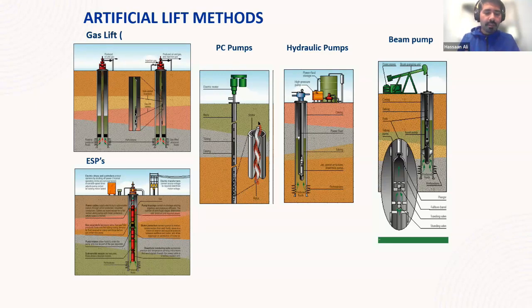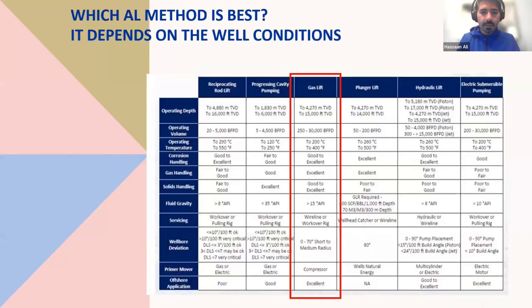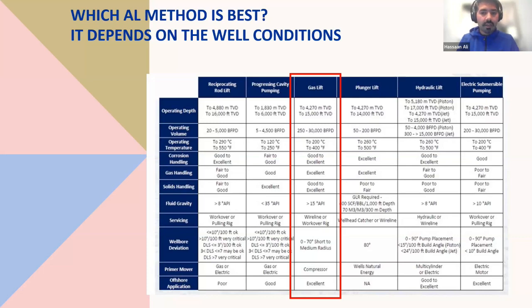Among all artificial lift systems, gas lift systems have their own particular niche. They are very reliable in terms of lifting formation fluid all the way to the surface. Gas lift systems are considered very reliable in terms of low maintenance cost and low cost of application. You can have a system deployed for decades without any maintenance, making them a primary method of artificial lift in offshore and deep-sea production applications.